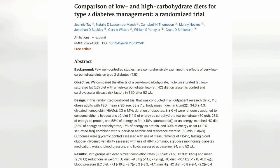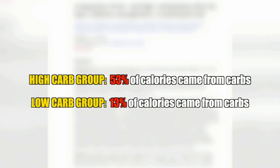In one study, they did a head-to-head comparison of a high-carb diet versus a low-carb diet for diabetes. In this study, the calories between the two groups were identical, but the composition of those calories was different. The high-carb group, 53% of their daily calories came from carbs, and the low-carb group, only 13% of their daily calories came from carbs.